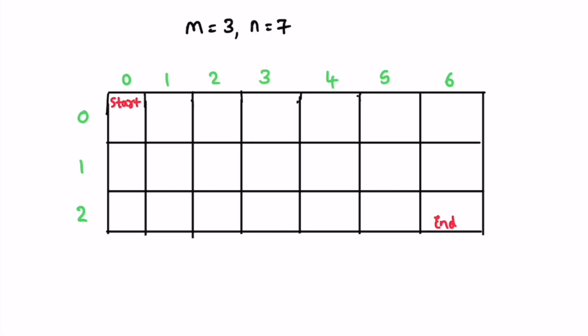The example gives us m equal to 3 and n equal to 7. m stands for the number of rows and n stands for the number of columns. There is a robot starting at the top left corner and we need to find the number of unique paths it can take to reach the bottom right corner. At one point of time, the robot can either move one step down or one step to the right — it cannot move diagonally.